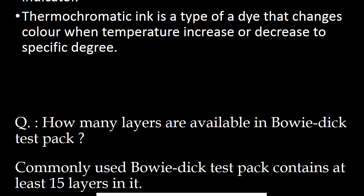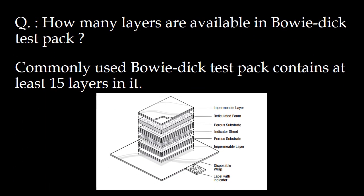The next question: how many layers are available in the Bowie Dick test pack? The commonly used Bowie Dick test pack contains at least 15 layers. The schematic shows an indicator sheet, above which there are three layers: an impermeable layer, reticulate foam, and porous substrate. Below the chemical indicator sheet, there are a porous substrate and an impermeable layer.